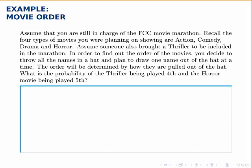So we need to count up the number of ways that this precisely could happen—the thriller is played fourth and the horror movie is played fifth—and divide that by the number of ways that anything could happen, the total possibilities for how these movies could be ordered. Let's start with the numerator, counting how many ways the thriller could be played fourth and the horror movie be played fifth.